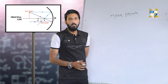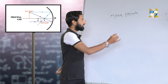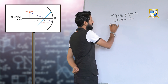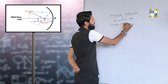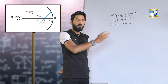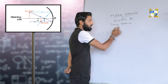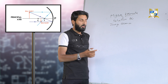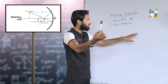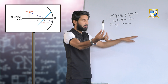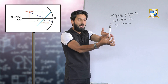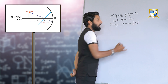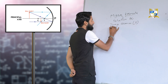The mirror formula is a relation between image distance, object distance, and focal length. Image distance is the distance at which the image is formed from the mirror. For example, if we consider this board as a mirror and the image is formed at a certain point, the distance between that point and the mirror is called image distance. It is denoted by the letter v.